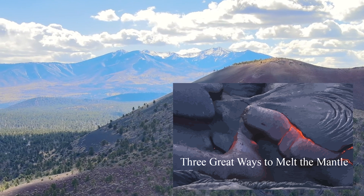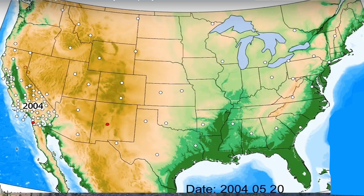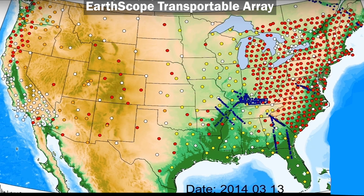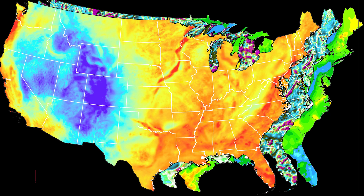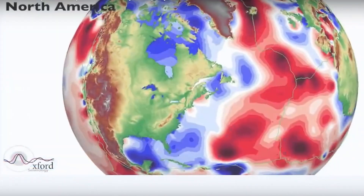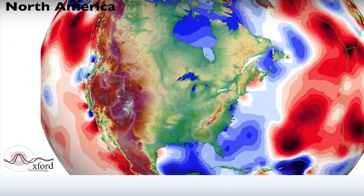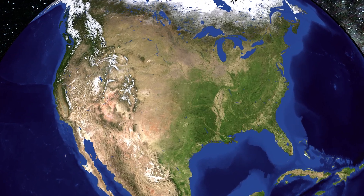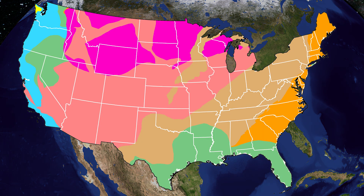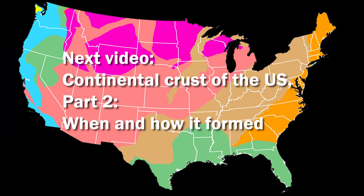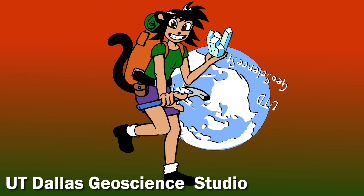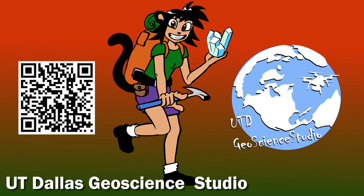Watch our video 'Three Great Ways to Melt the Mantle' to find out how. That wraps up our story of what one geophysical technique tells us about the crust of the continental U.S. The important conclusion is that this crust and the mantle beneath it shaped our nation in ways we take for granted today, such as mountains in the west and east and rich farmland and great rivers in the middle. This happened over three and a half billion years, and that's the story of the next video in our series: 'The Continental Crust of the United States: When and How It Formed.' Thanks for watching, and please like and subscribe to the UT Dallas Geoscience Studio YouTube channel for more earth and space science videos.